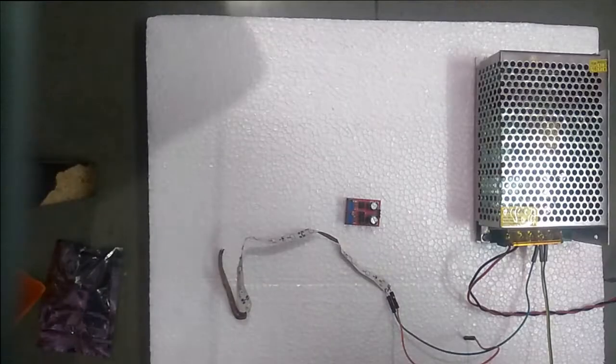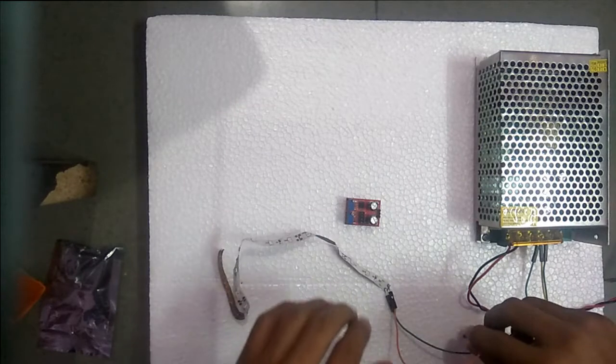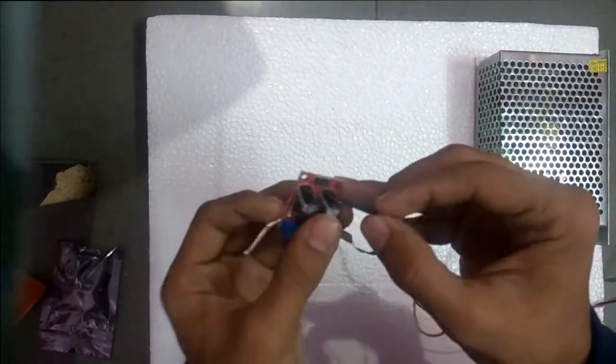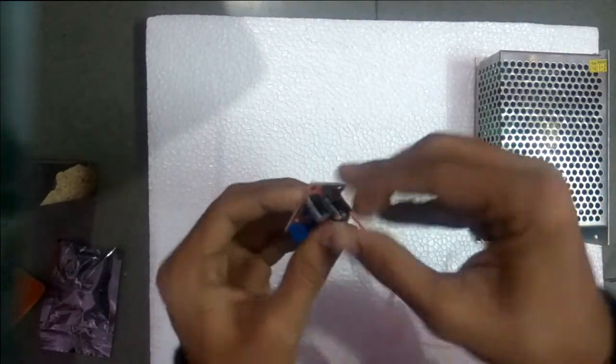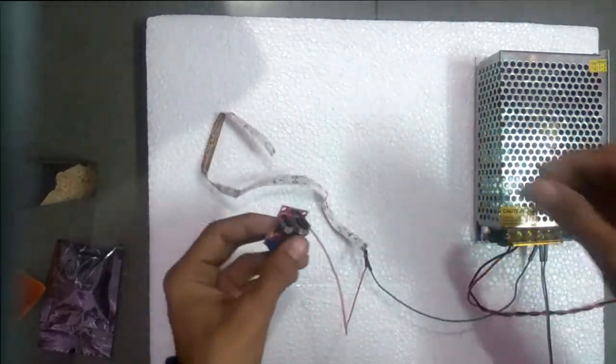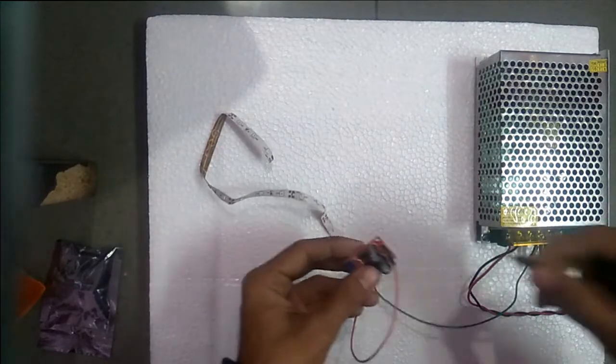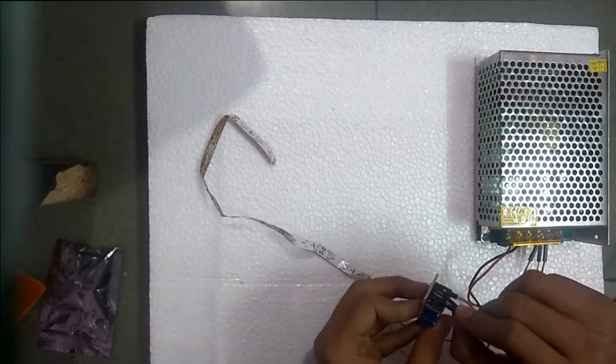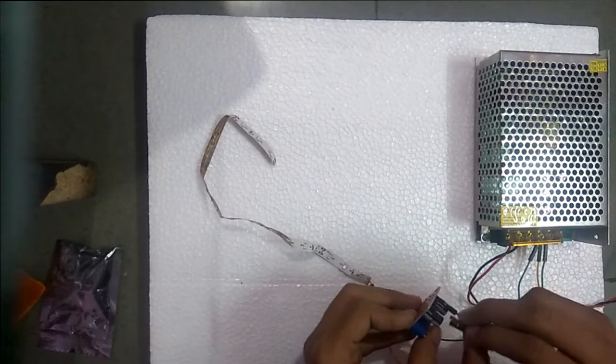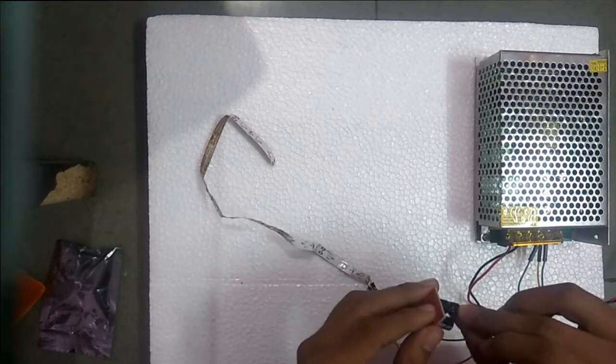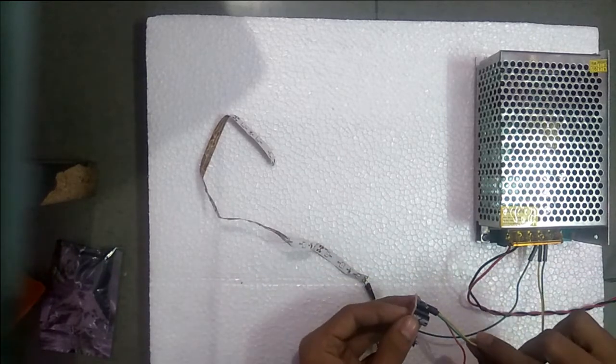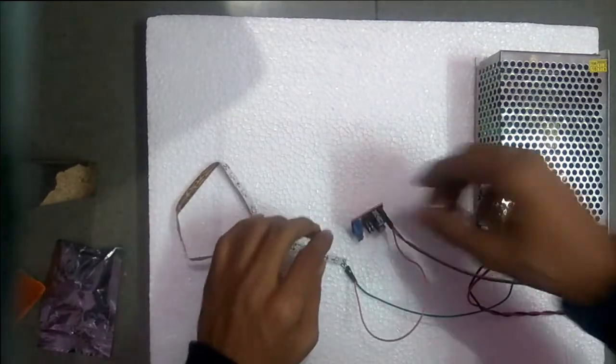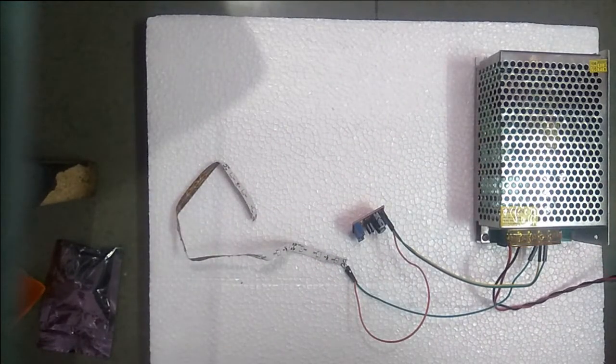Now let us check it by making our connections. First I am connecting the output pin to the positive of the LED strips that I have. Connected the positive of the power supply with the VCC and the ground of the power supply with the ground of the module. Let us start our module.